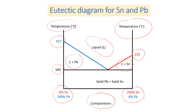And we have solid lead and solid tin. At the eutectic point, we have the composition of both components, consisting of 62% tin and 38% lead. We label this point as the eutectic point, and we have solid lead present.